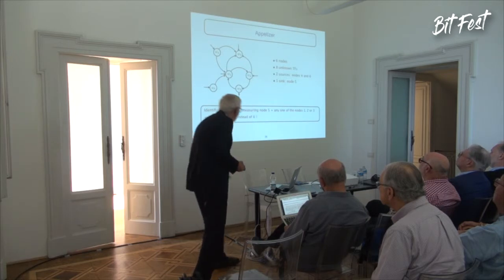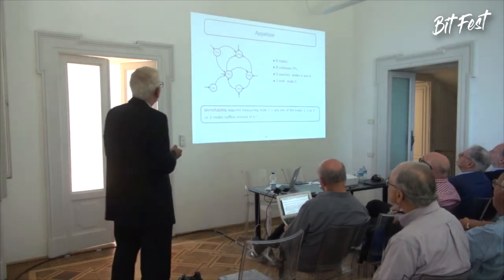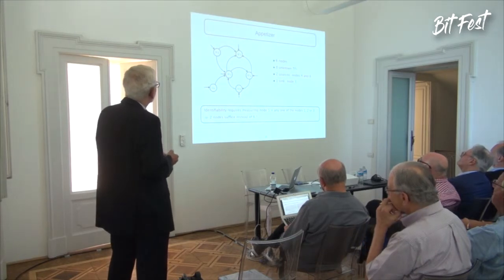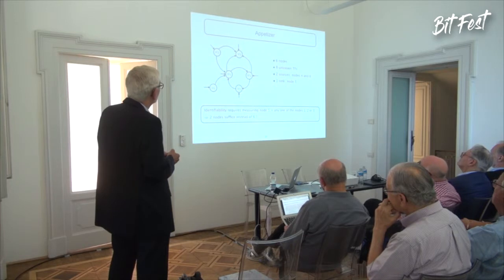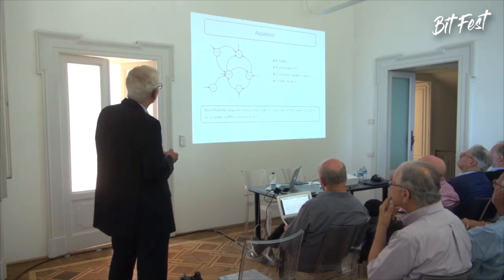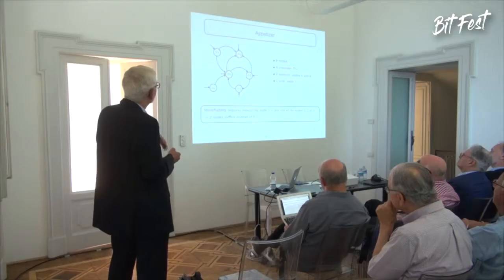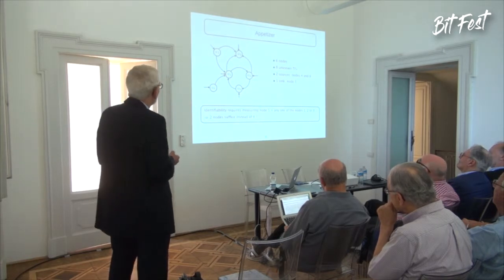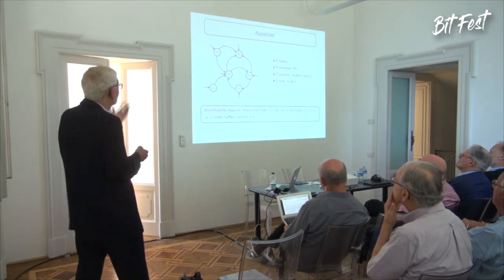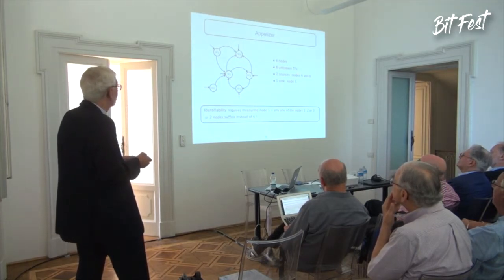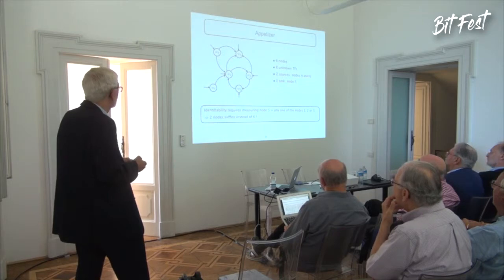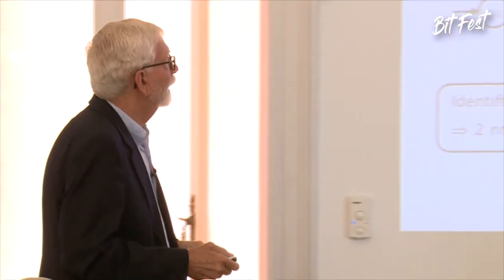As an appetizer, suppose we have this network with six nodes, eight unknown transfer functions, two source nodes w4 and w6 that have no incoming links, and one sink node with no outgoing edge. It turns out that for this network we can identify all eight unknown transfer functions by measuring node 5 and any one of nodes 1, 2, or 3 — so with just two nodes measured rather than measuring all six.